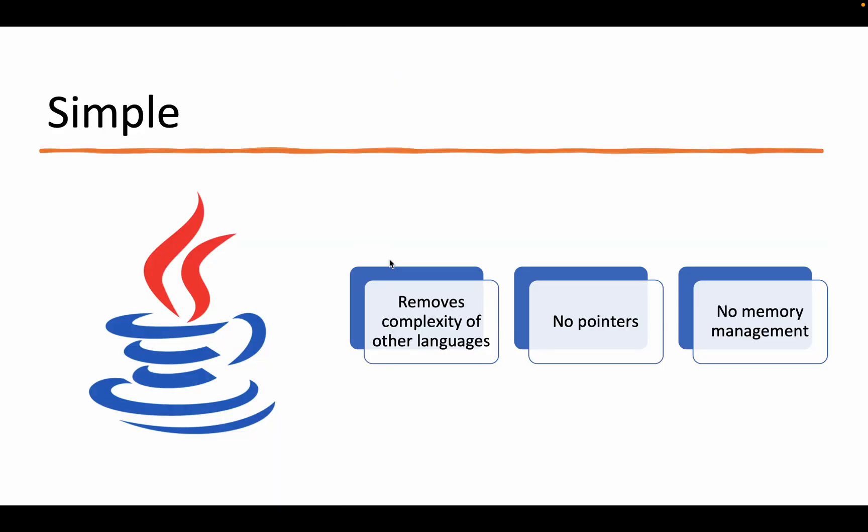Java is simple. When you are coding in Java, a lot of things have been removed that a developer used to need to do himself. In the early 90s when Java was developed, C++ and C were the common languages of choice. In Java, you don't have pointers. If you coded in C++, you had to write code to deal with pointers and memory addresses, which was quite complex.